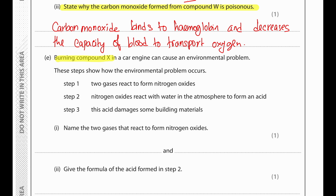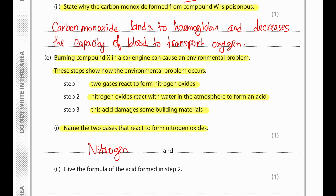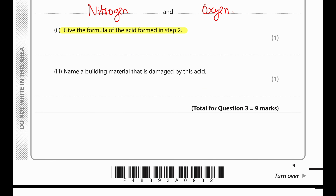Burning compound X in a car engine can cause an environmental problem. Inside the car engine, nitrogen and oxygen react at very high temperature to form nitrogen oxides. Nitrogen oxides react with water in the atmosphere to form nitric acid, HNO3. The acid damages some building materials. Name a building material damaged by this acid: limestone or marble.